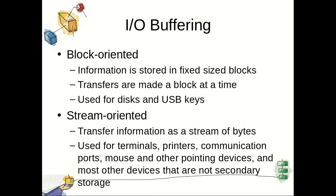With respect to IO buffering, data is transferred in two different orientations: first one is block orientation and second one is stream orientation. In case of block orientation, information is stored in fixed blocks and transfers are made with respect to these blocks. In case of stream oriented transfer, information is in unstructured bytes — for example, terminals, printers, and communication ports.